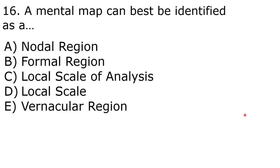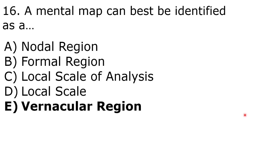This question is about mental maps and regions. The correct answer is E, vernacular region. A vernacular region is also known as a perceptual region — it's a region that varies from person to person. A mental map can vary person to person: it can leave out certain traits, or draw features differently depending on who is making it. That's why a mental map is considered to be a vernacular region.